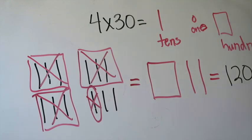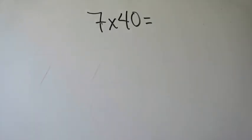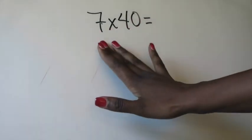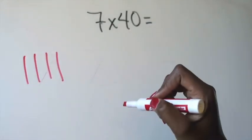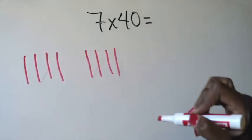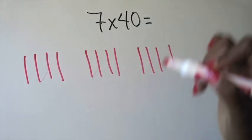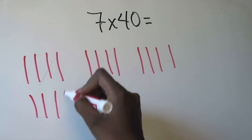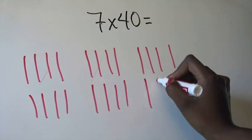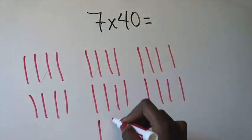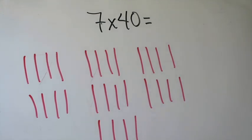Since this is a new concept for a lot of us, I'm going to go ahead and give you a second example. We are going to multiply 7 times 40, so I need 7 groups of 40. Group 1: 10, 20, 30, 40. Group 2: 10, 20, 30, 40. Group 3: 10, 20, 30, 40. Group 4: 10, 20, 30, 40. Group 5: 10, 20, 30, 40. Group 6: 10, 20, 30, 40. And group 7: 10, 20, 30, 40. Now I need to remember I cannot have more than 10 tens without regrouping.